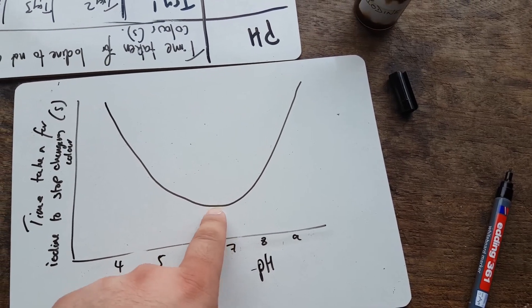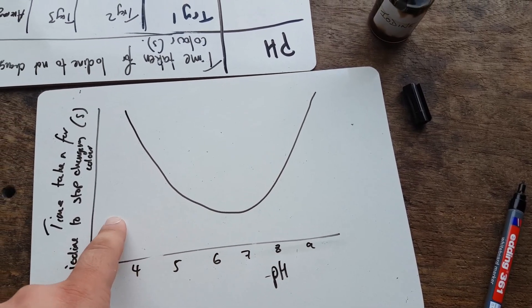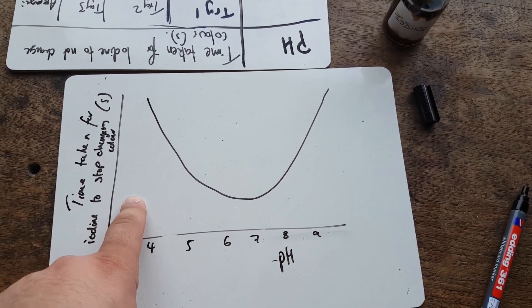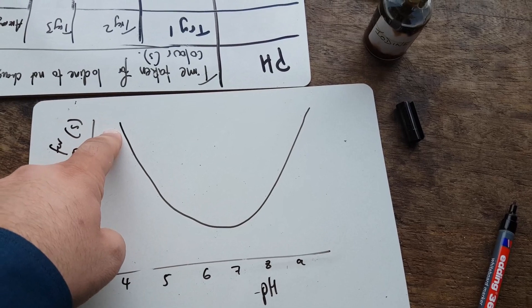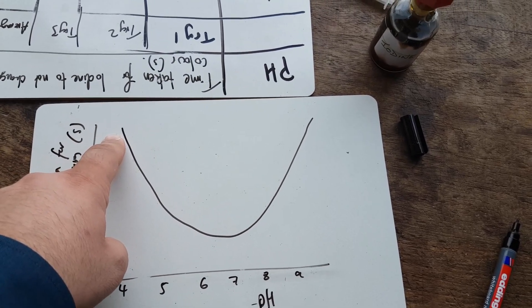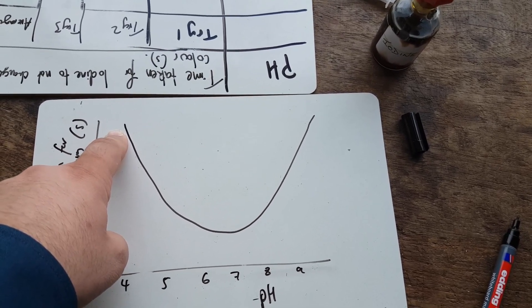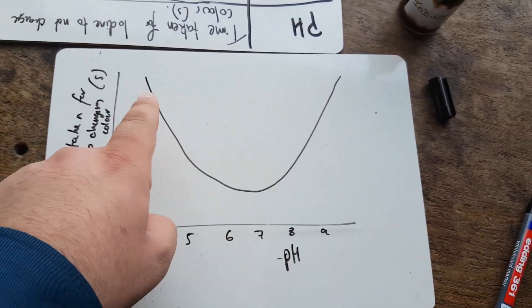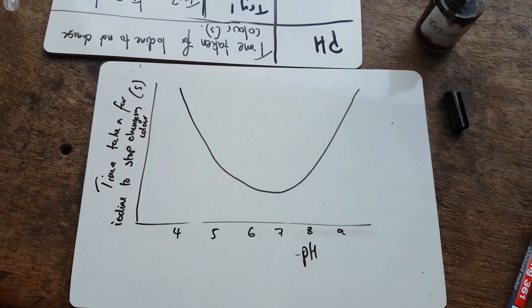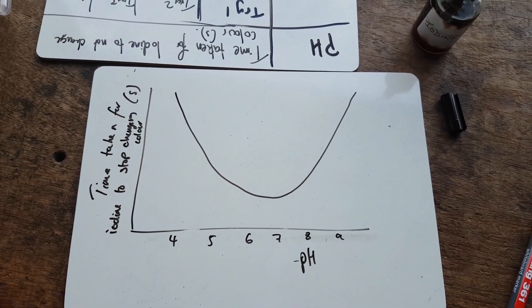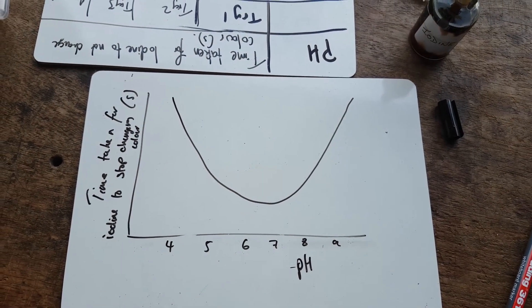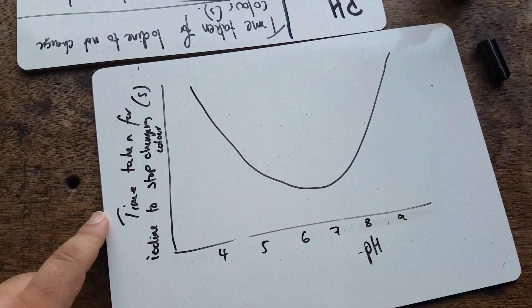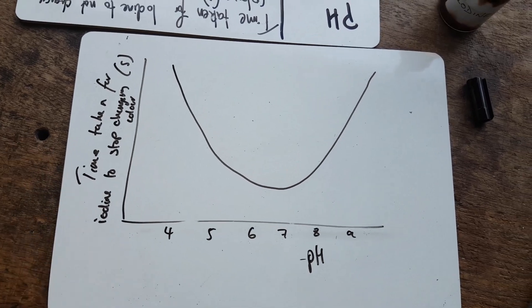In other words, at pH 7, roughly, it takes less time for the iodine to stop changing color. Whereas at a higher pH, it takes more time before the iodine stops changing color. And on both sides here, what's happening is the enzymes are being denatured. The active site is being denatured, and therefore, the reaction is taking longer to occur. Now, of course, we can change this graph into a rate graph, and I'll show you how to do that in a bit.